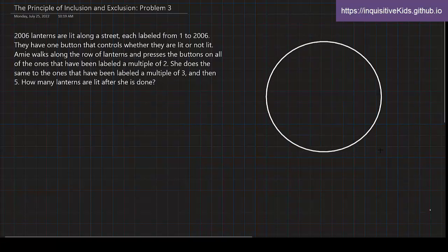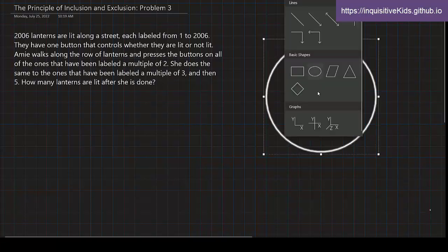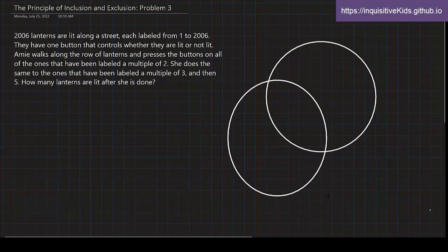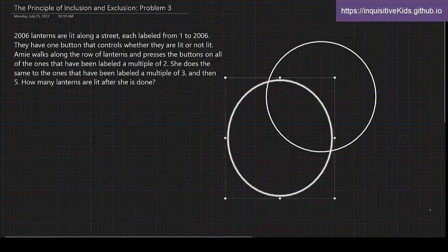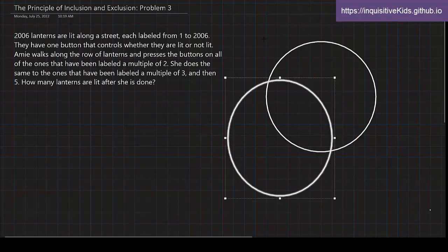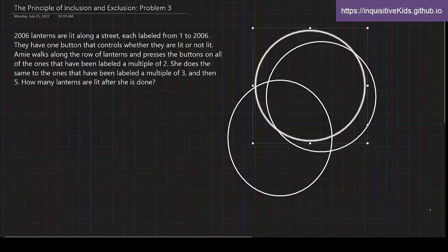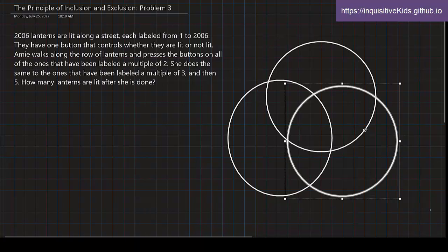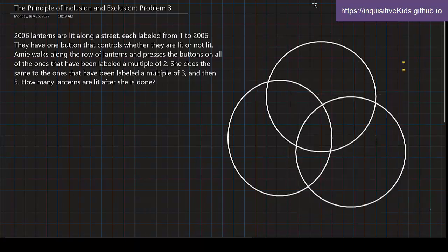First, we make a Venn diagram. We're going to start labeling them by 2, 3, and 5. And this time it's 2006.